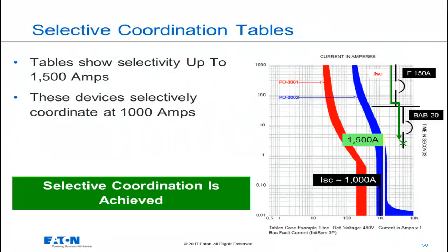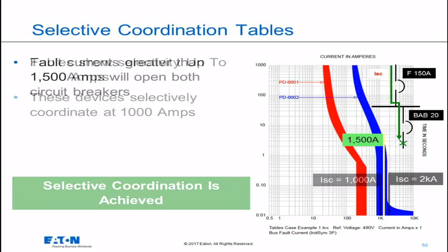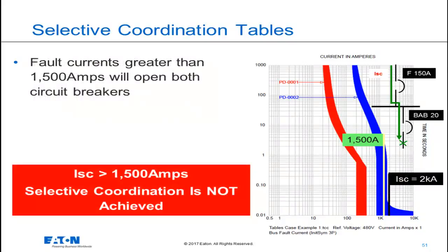For this example, a short circuit current of 1,000 amps flowing through both circuit breakers — the F-150 will remain closed and the BAB-20 will open. Selective coordination is achieved as documented in the selective coordination tables. Should these devices see a current greater than 1,500 amps, selective coordination is not achieved as documented by the TCC curves and the selective coordination tables.